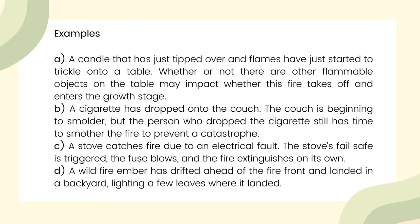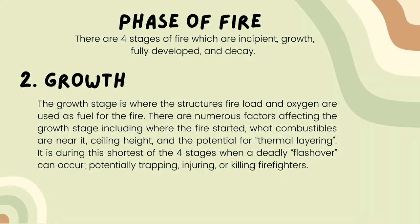Examples: A. A candle that has just tipped over and flames have just started to trickle onto a table — whether or not there are other flammable objects on the table may impact whether this fire takes off and enters the growth stage. B. A cigarette has dropped onto the couch; the couch is beginning to smolder, but the person still has time to smother the fire to prevent a catastrophe. C. A stove catches fire due to an electrical fault — the stove's fail-safe is triggered, the fuse blows, and the fire extinguishes on its own. D. A wildfire ember has drifted ahead of the fire front and landed in a backyard, lighting a few leaves where it landed.